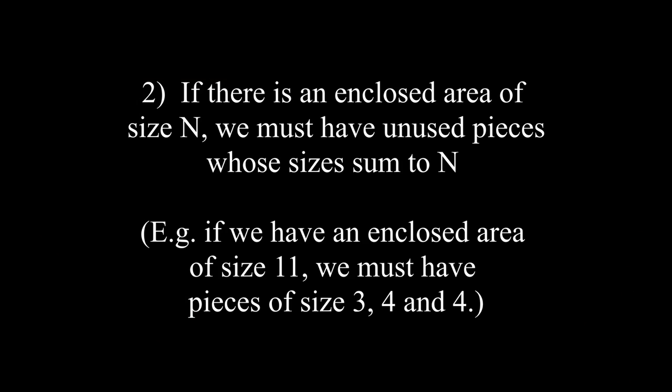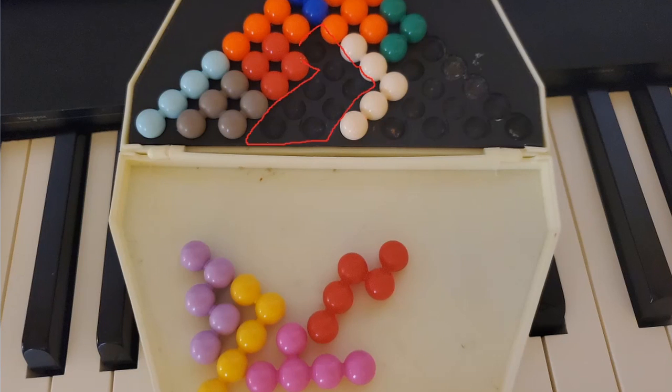Enclosed areas of size N must have unused pieces whose sizes sum to N. We have an enclosed area here of size 8, which means there then must be pieces of sizes 4 plus 4 or 5 plus 3. Since neither of those exist here, this board is also invalid.